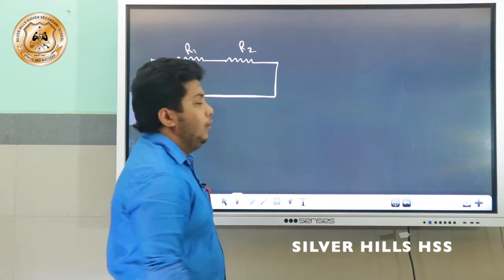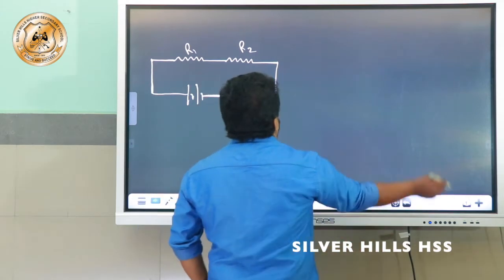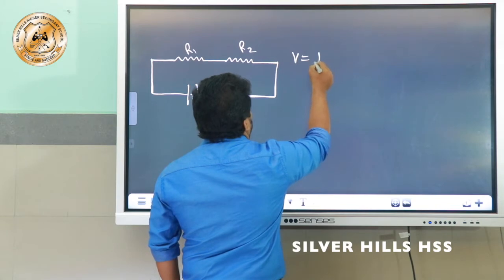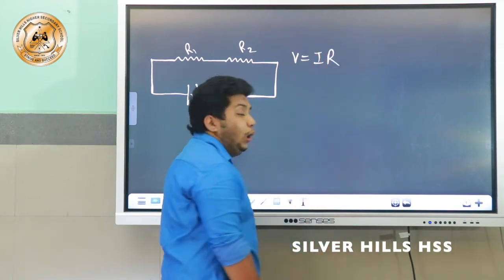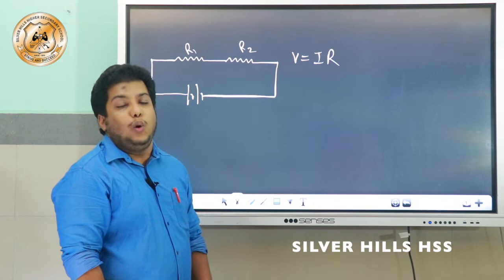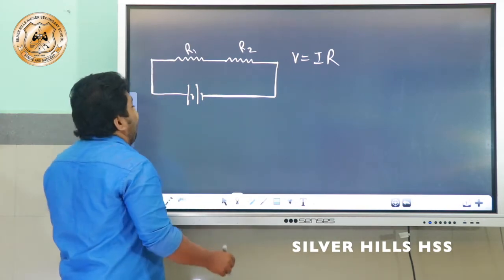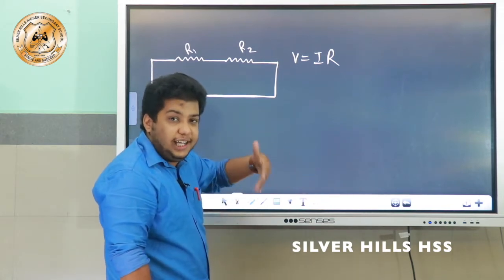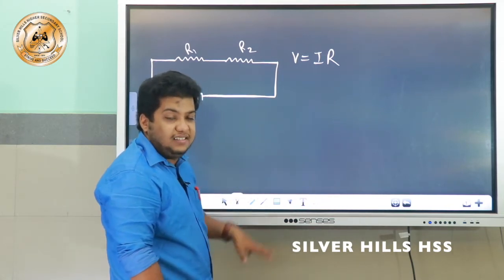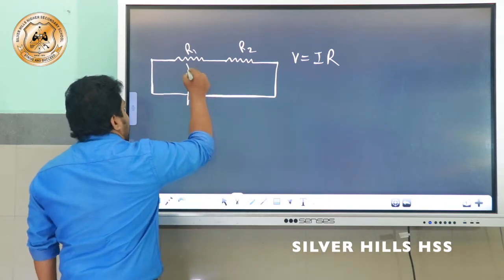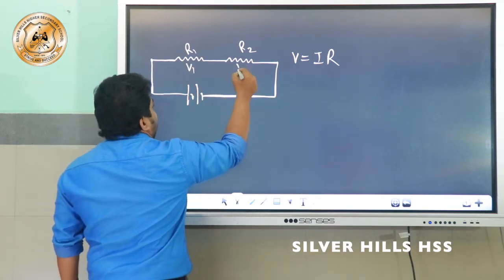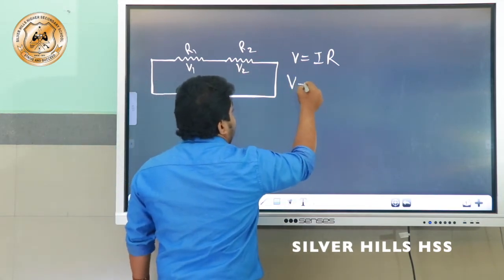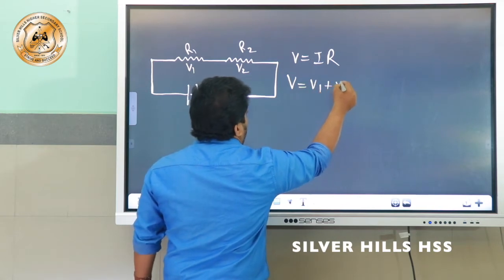According to Ohm's law, I is equal to V by R, or V is equal to IR. In series combination the potential will be different. The voltage will be different across two resistors. That means here it should be taken as V1 and here it should be taken as V2. So the total V is equal to V1 plus V2.